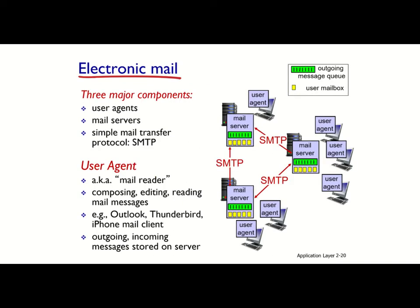Then we have mail servers, which are the components that actually store emails from different user agents. We also have SMTP — Simple Mail Transfer Protocol — which is the protocol responsible for exchanging messages between different servers. In a mail server, we have a mailbox which contains incoming messages for users, and a message queue which contains outgoing mail messages that are going to be sent soon. They are in a queue because the server's transmission capacity may not be fast enough to send all of them at once.